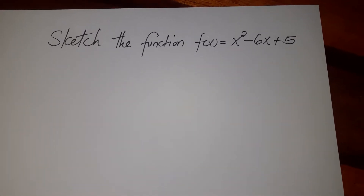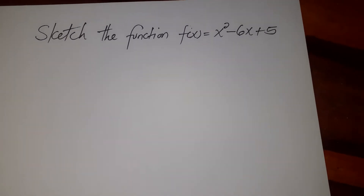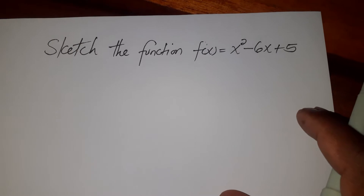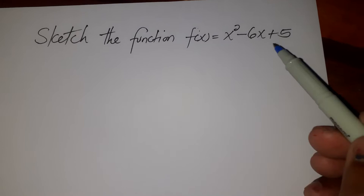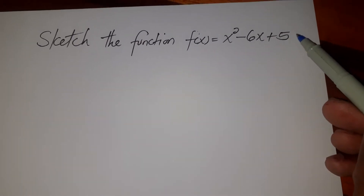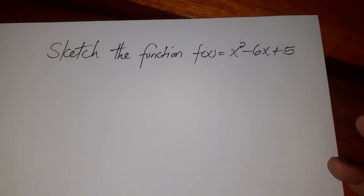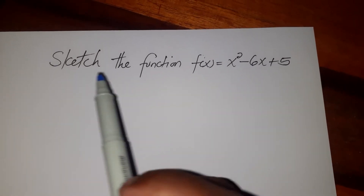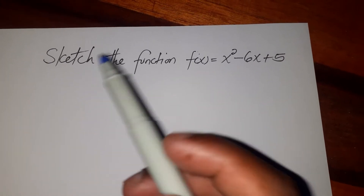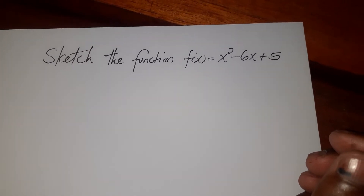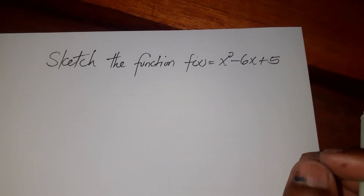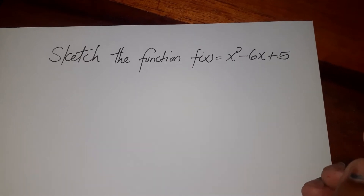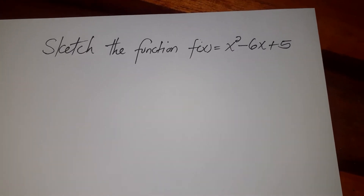In this video we are going to look at this function: x squared minus 6x plus 5. We want to sketch this function — this is a quadratic expression. Now what we need to know whenever you get a question like that where you need to sketch: sketching is a little bit different from drawing. When we draw we put all the details on the diagram, but when we sketch we only consider the important points.